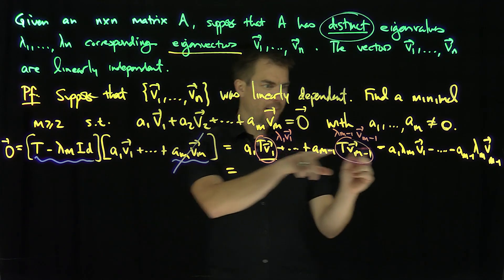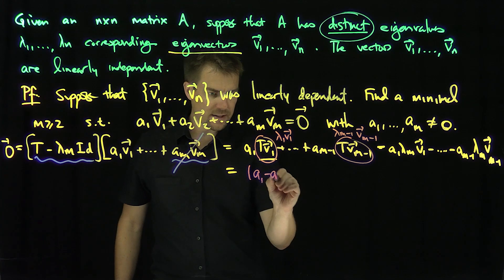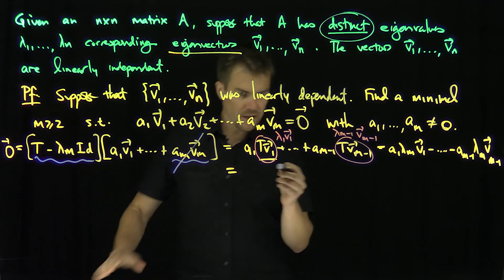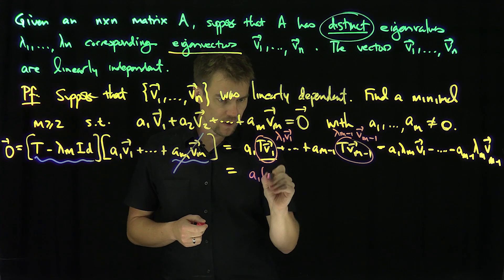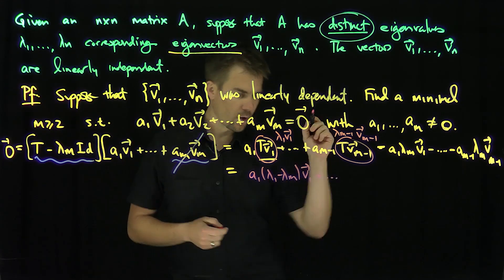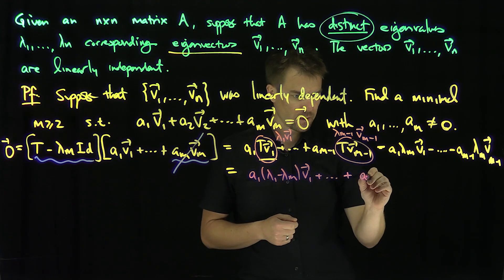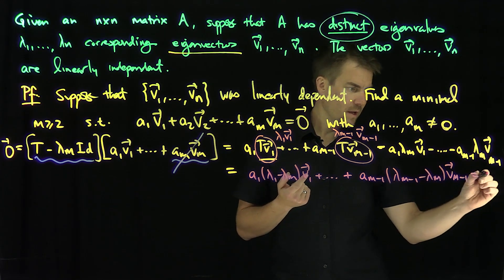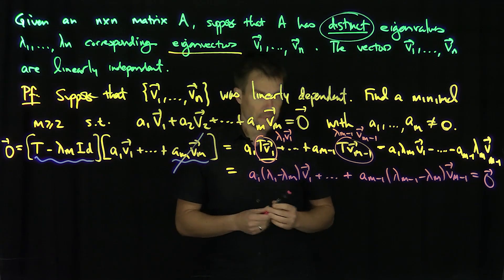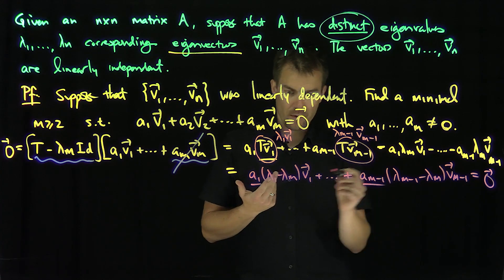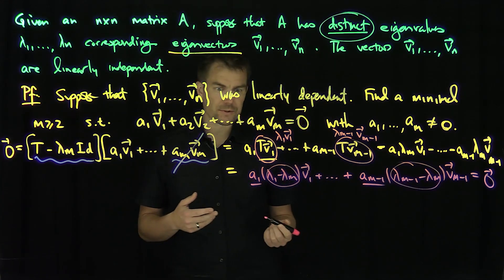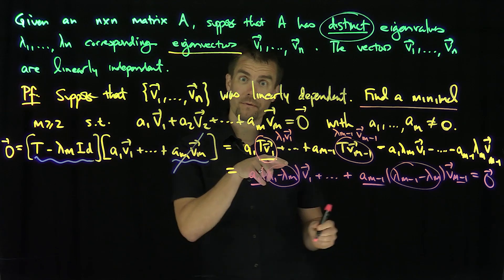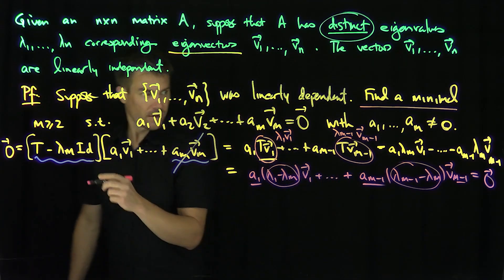Grouping all these terms together: a1*(lambda_1 - lambda_m)*v1 + ... + a_{m-1}*(lambda_{m-1} - lambda_m)*v_{m-1} = 0. Now I know that none of a1 through am are equal to zero, and since the lambdas are distinct, none of those coefficient factors are zero. So I've found an m-1 term combination equal to zero, which contradicts the minimality of m.